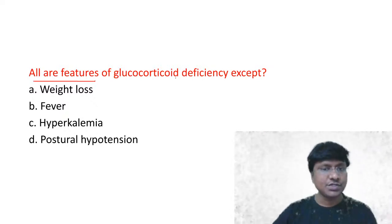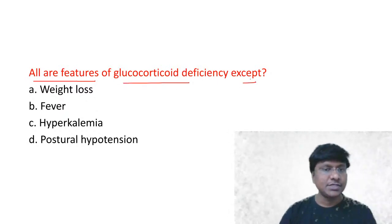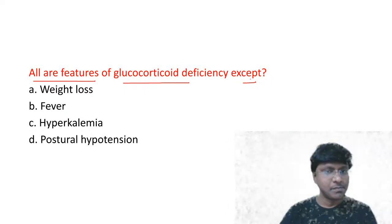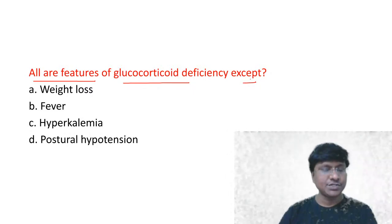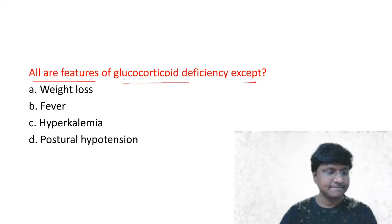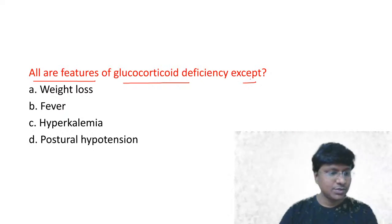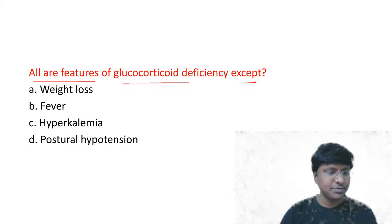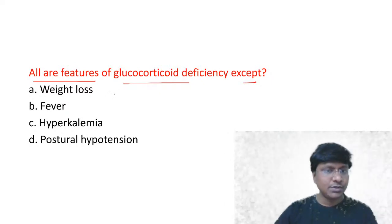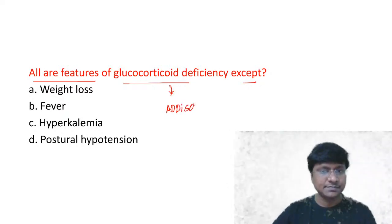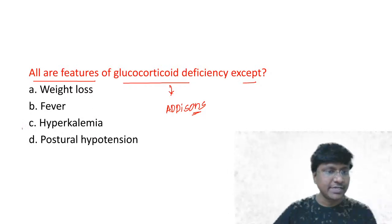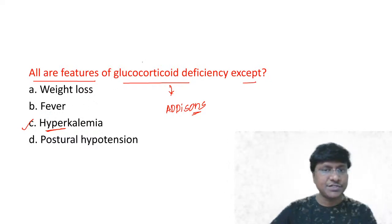Next question: all are features of glucocorticoid deficiency except — weight loss, fever, hyperkalemia, postural hypotension. The clinical condition here is Addison's disease. Very good, Sagar has answered — the answer is hyperkalemia. Glucocorticoid deficiency will cause fever.